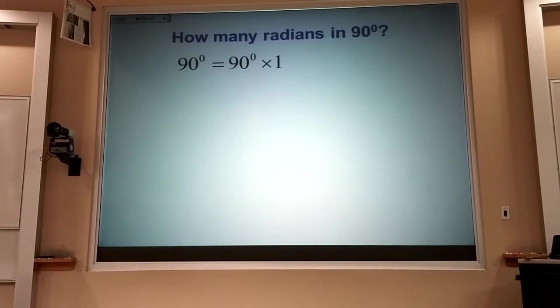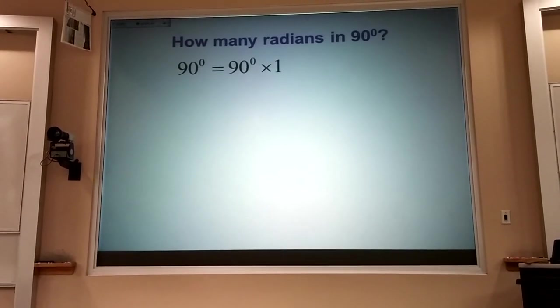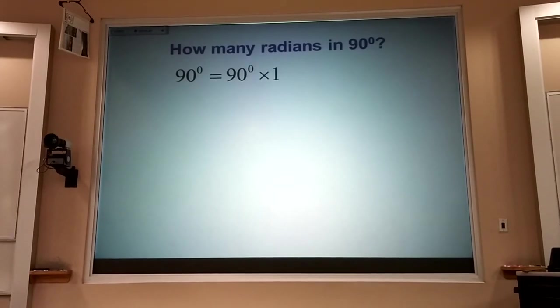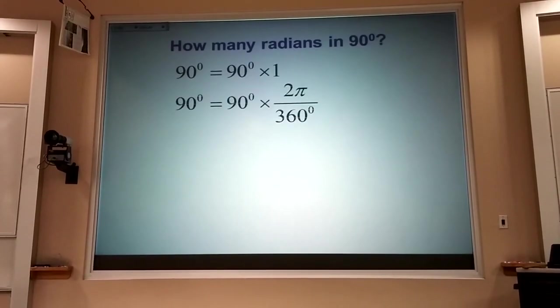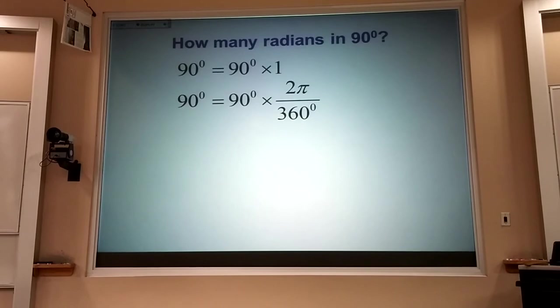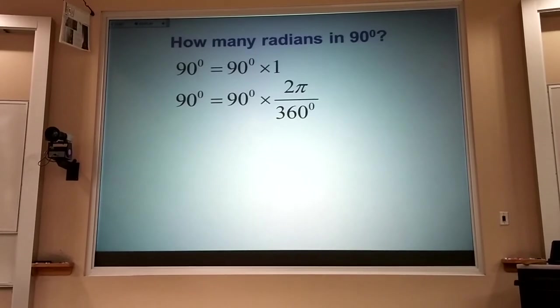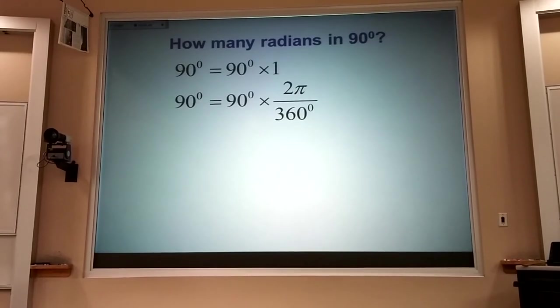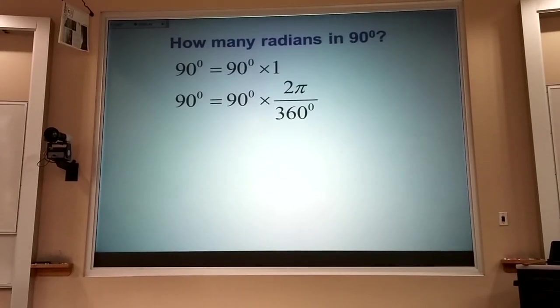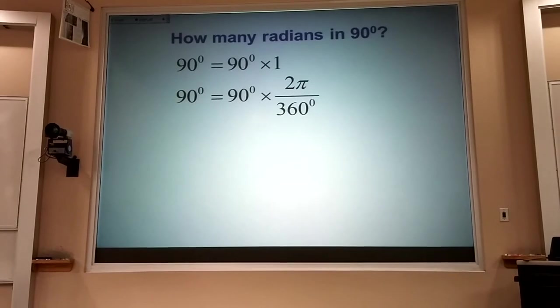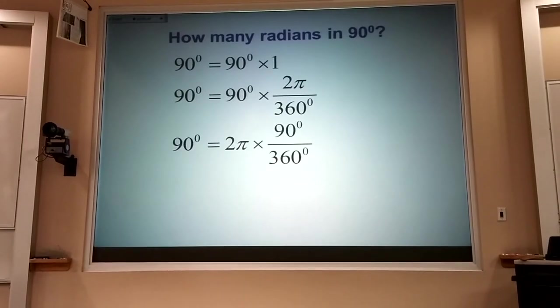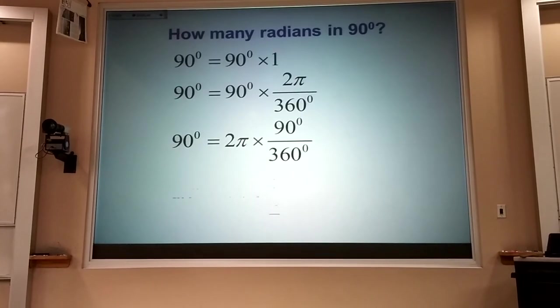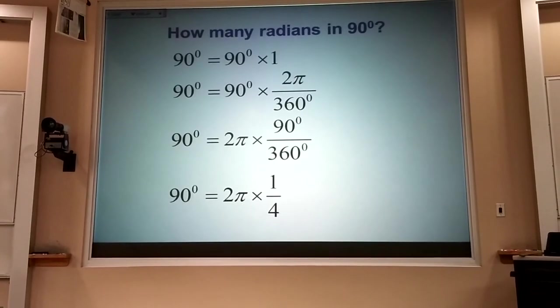And I can always multiply anything by one without changing it. But there's lots of ways to write the number one. For example, 2π radians is once around a circle. So is 360 degrees. So 2π over 360 degrees is the number one. Now, I'm going to rearrange those so that it's clear what fraction of a circle I'm going around. I'm going around a quarter of a circle.